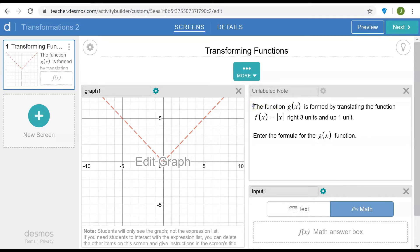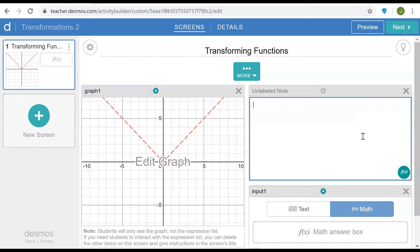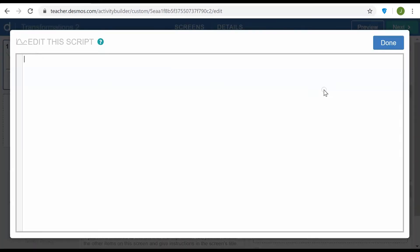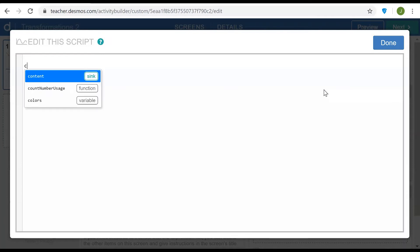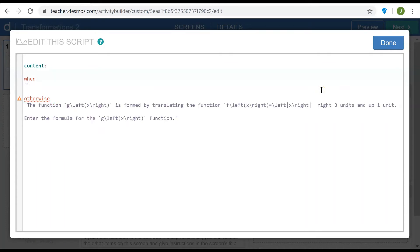So let me cut this and say see computation layer script, and then go into the computation layer script. Typing content, I'm going to define this with a when-otherwise statement and otherwise will be the text that we just saw, the default text before any answer is given.